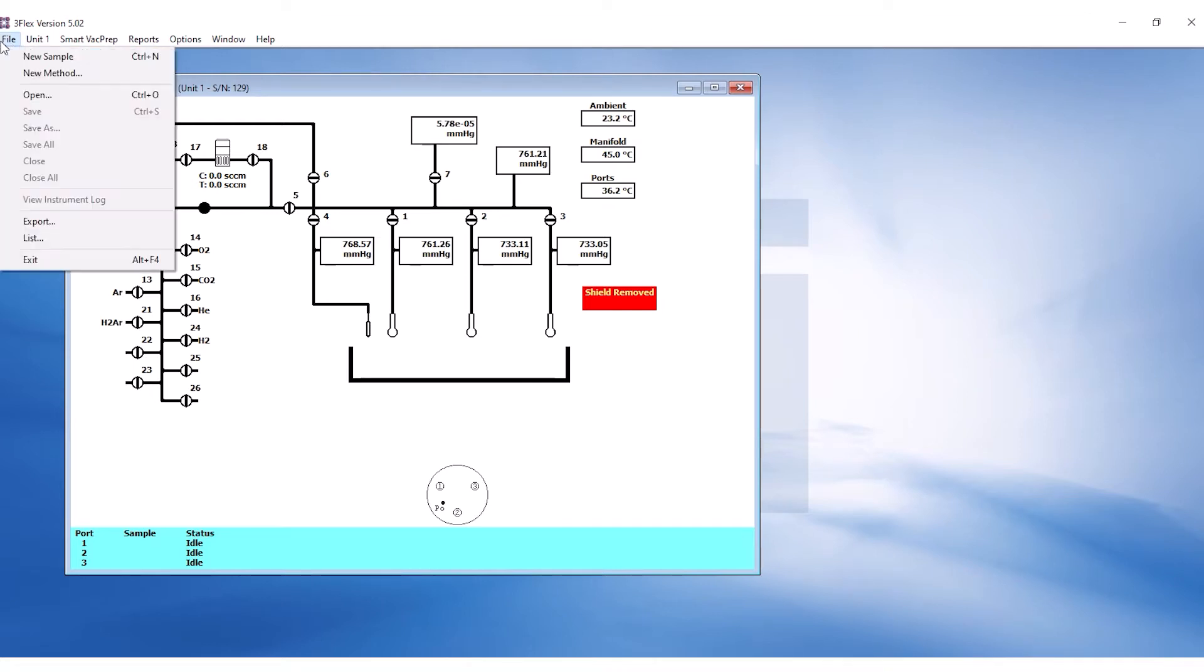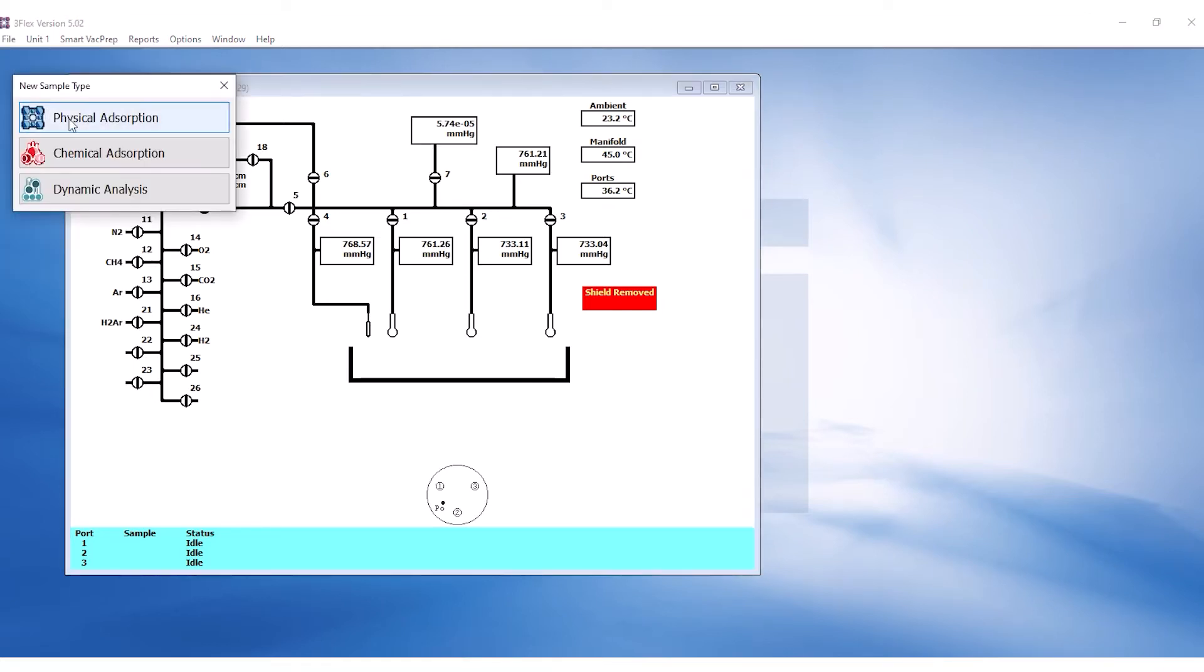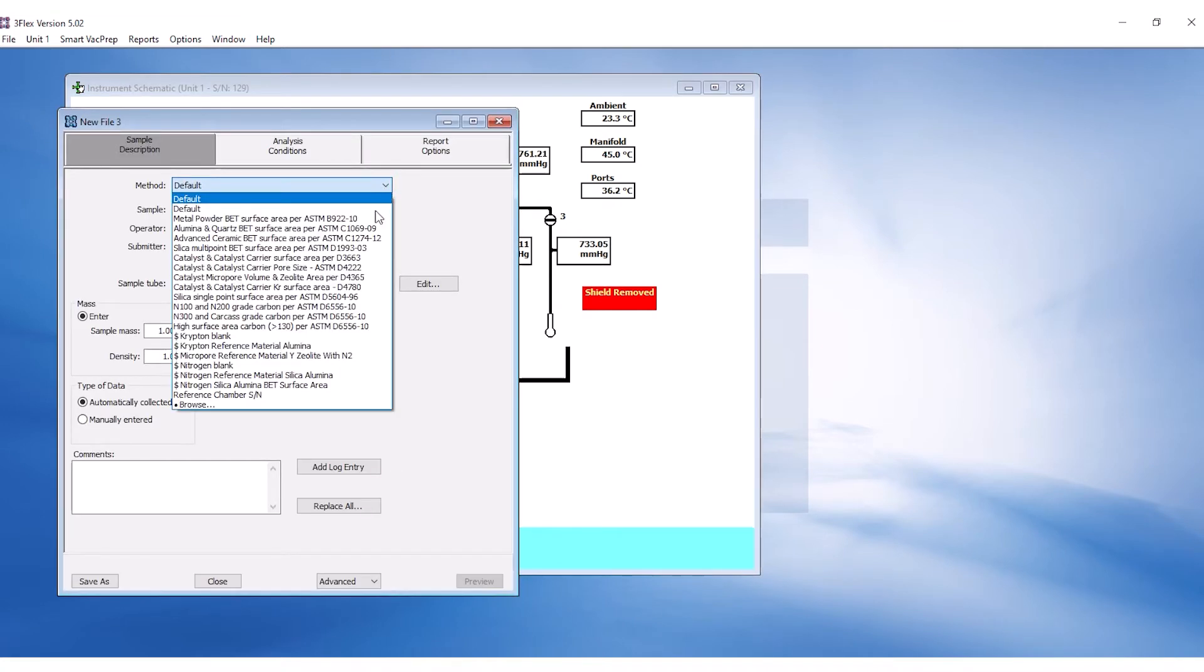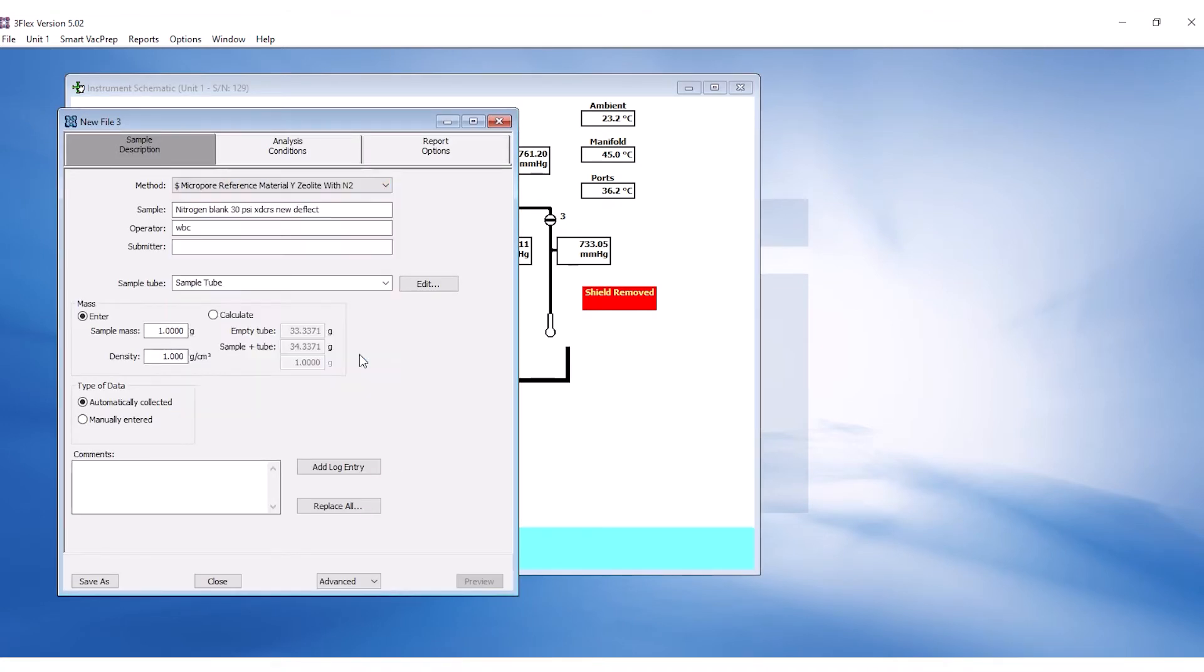Create a new sample file by clicking on File New Sample. Select Physisorption Adsorption for this sample type. Under Sample Description, select the method Micropore Reference Material Y Zeolite with Nitrogen from the drop-down menu. Enter the operator's initials and the masses.